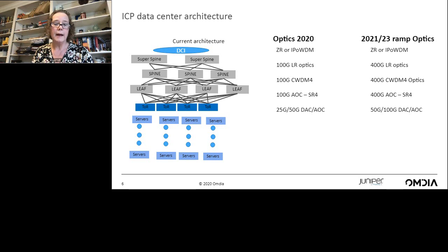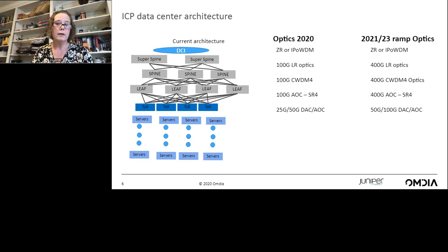This shows where we are today with optics in 2020. We have primarily 100G from the top of rack out to the super spine, as well as DCI connections. DCI connections are transitioning to 400G and have been for a couple of years. At the server it's 25G and 50G with direct-attached copper or active optical cables. That's all going to transition pretty quickly starting next year to 400G LR optics in the spine and super spine, DR4 and FR4 in the leaf and spine, and 50G and 100G in the server connections.